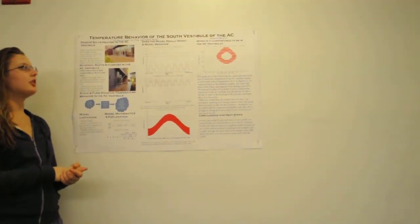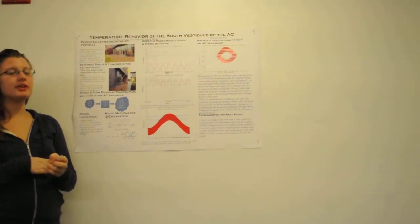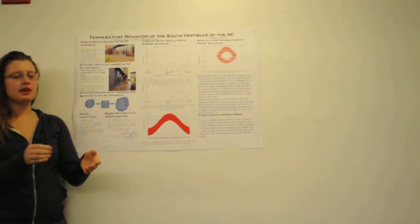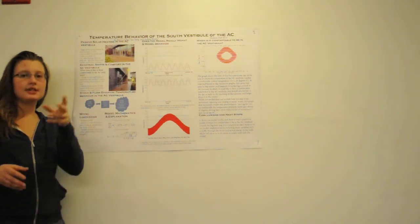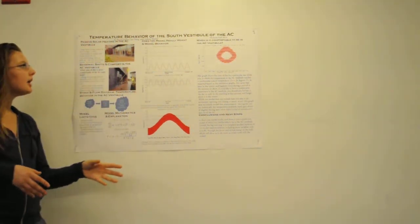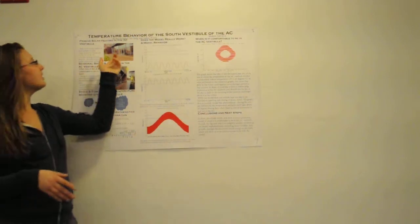So these are the temperature and behavior of the south vestibule of the AC. This is the vestibule that's closest to Milas Hall on the south side. It's a big glass wall, and we included a photo to make it slightly more clear.